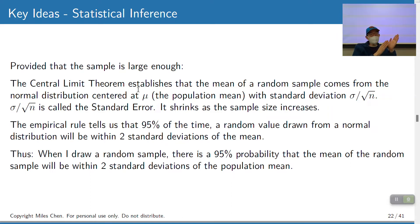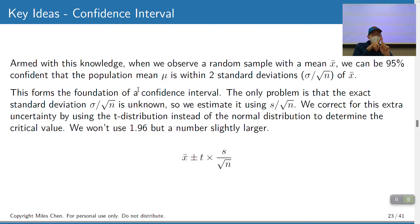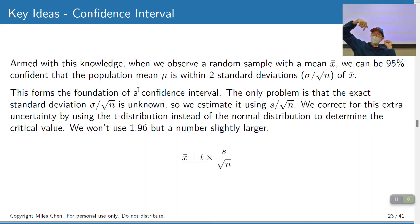We take that statement and flip it around. 95% of the time when I draw a random sample, it's going to be within two standard deviations of the population mean. So now if I see a random sample mean X-bar, I could be 95% confident that the population mean mu is within two standard deviations of X-bar. This is kind of a reverse reasoning — a confidence interval.